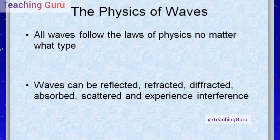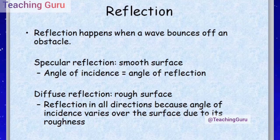First, reflection. Reflection happens when a wave bounces off an obstacle. There are two types: specular reflection and diffuse reflection. Specular reflection happens on a smooth surface, where the angle of incidence is equal to the angle of reflection. Diffuse reflection happens on a rough surface, where the angle of incidence is not equal to the angle of reflection — reflection occurs in all directions because the angle of incidence varies over the surface due to its roughness.